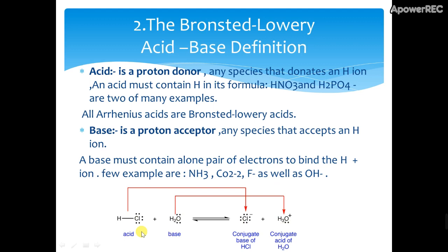Now, do you want to see what a conjugate acid and conjugate base are? When HCl was the acid, it changed to Cl⁻ — so here it is called the conjugate base. Water was the base, and when it accepted the proton it changed to H3O⁺, so it works as an acid — it is called the conjugate acid of water. The species that was an acid and converted to a base is called the conjugate base.